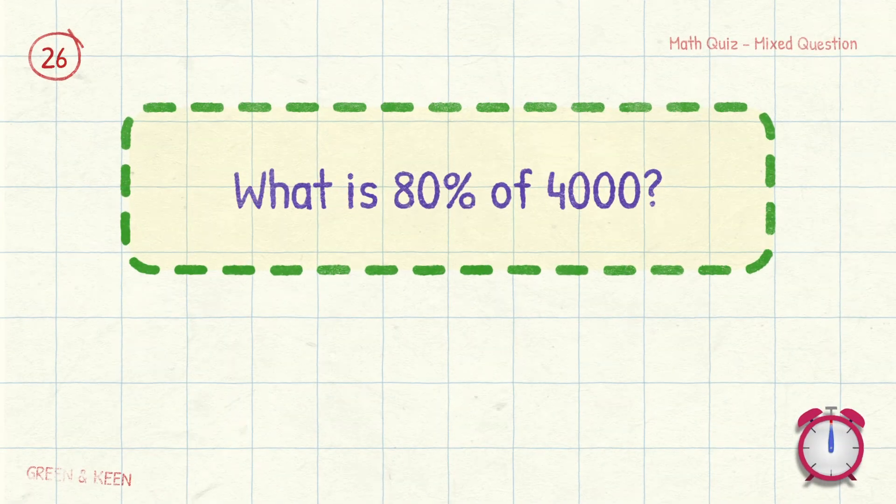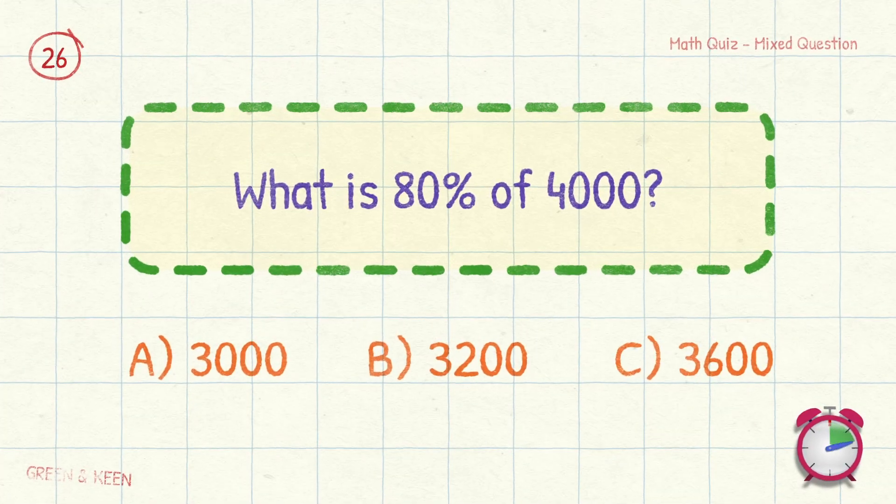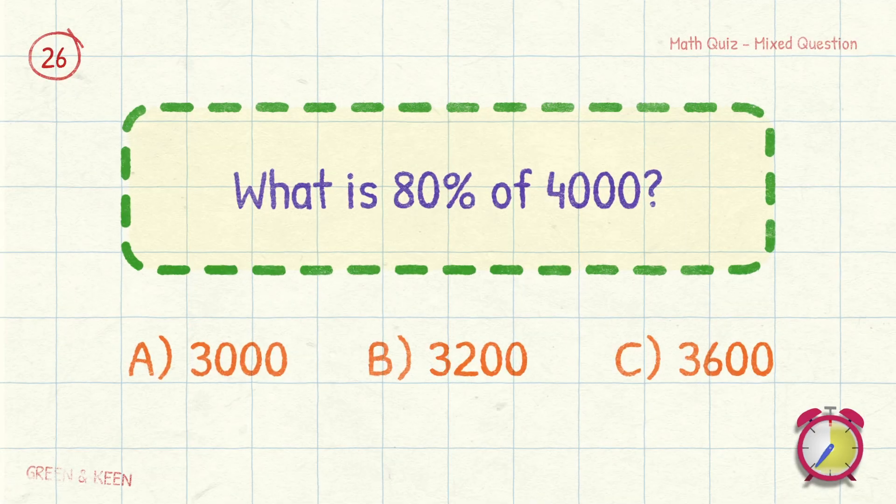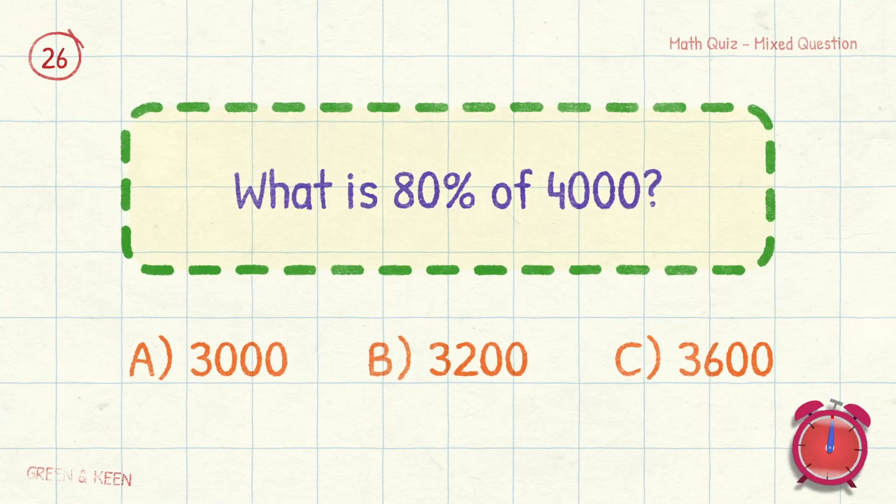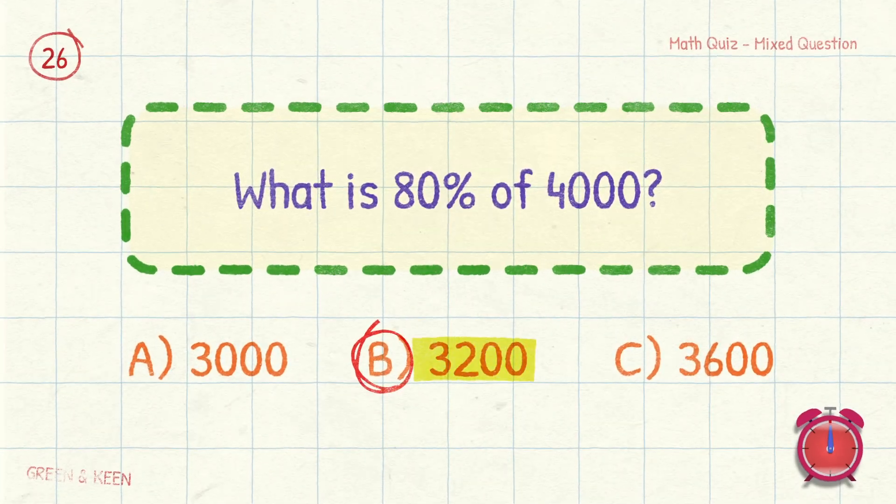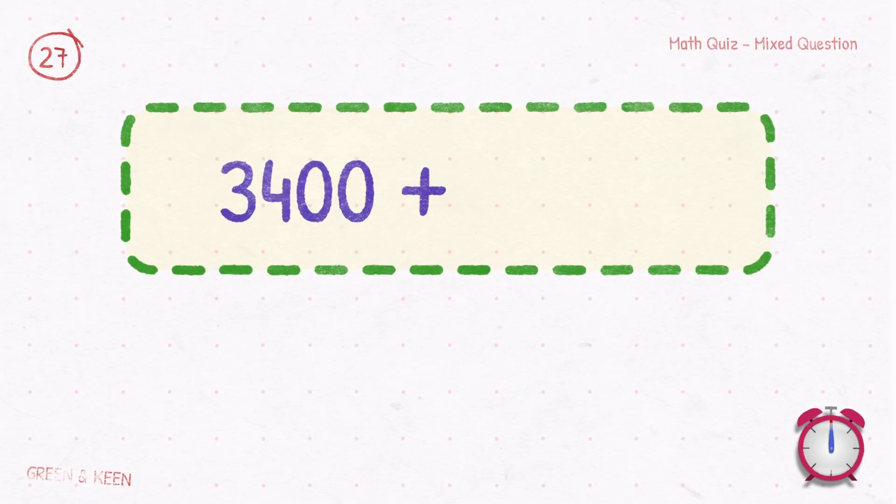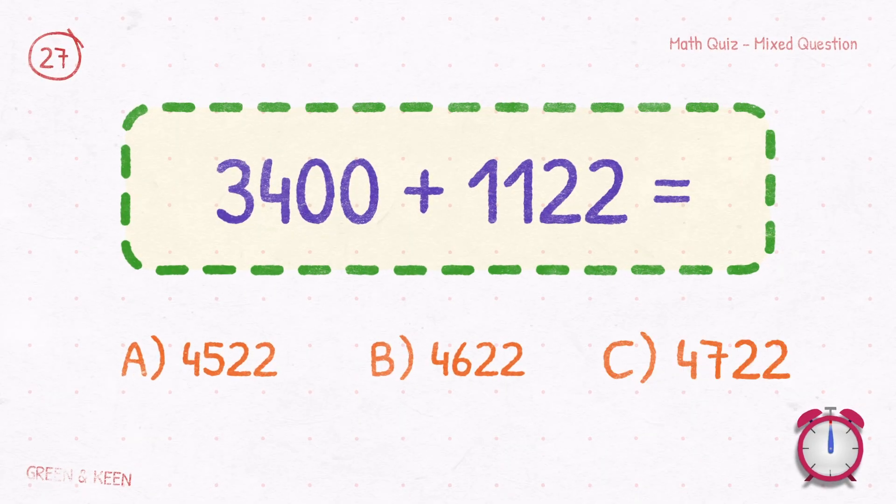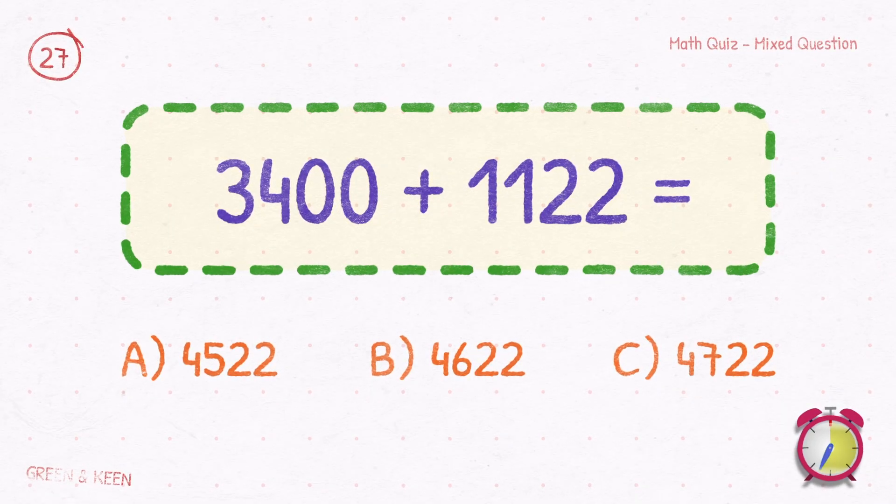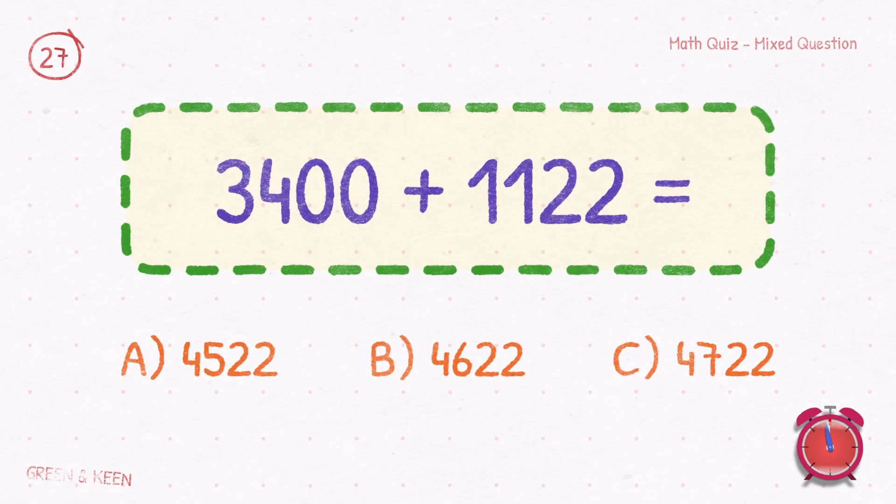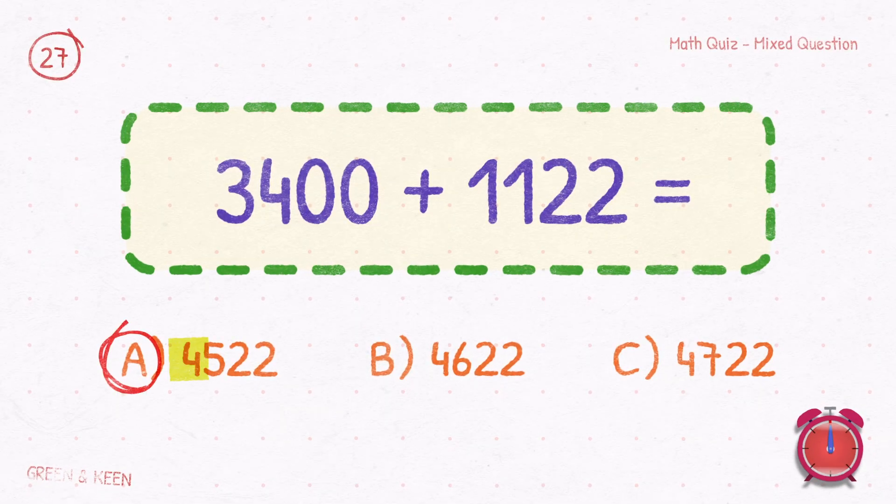What is 80% of 4,000? 3,200. 3,400 plus 1,122 equals? That's 4,522.